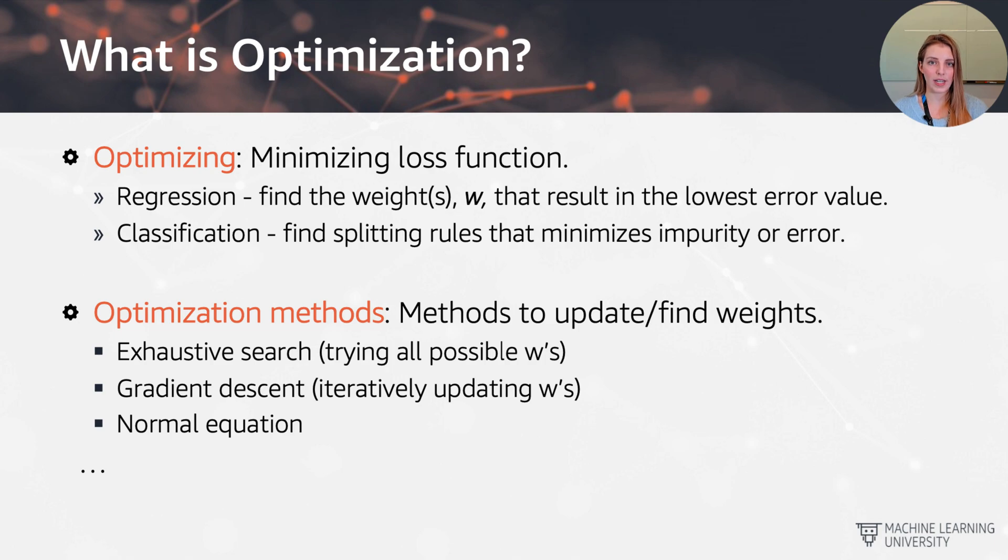In the case of classification, obviously we've seen an example of log loss just now where we also have parameters that we can try to find. But there also exist other rules regarding finding splitting rules that minimize the impurity or error that is found. So here this will come down to which type of algorithm we're using and what we're trying to minimize.